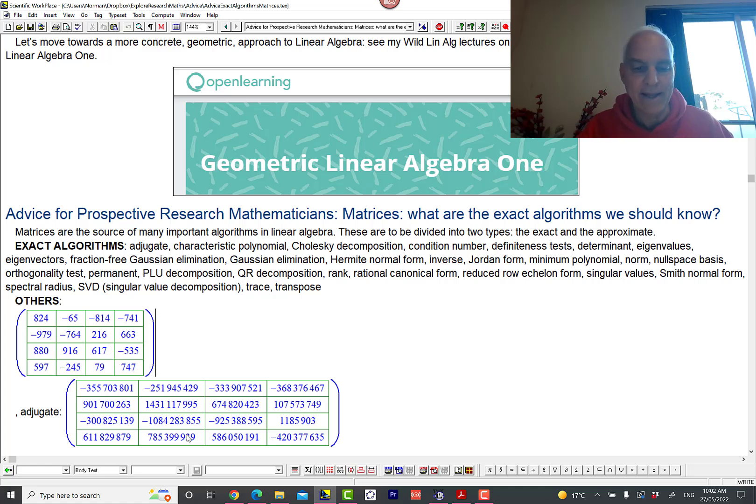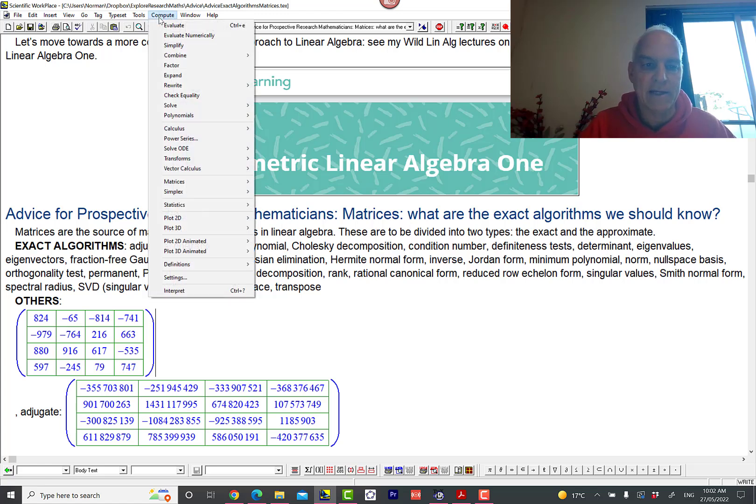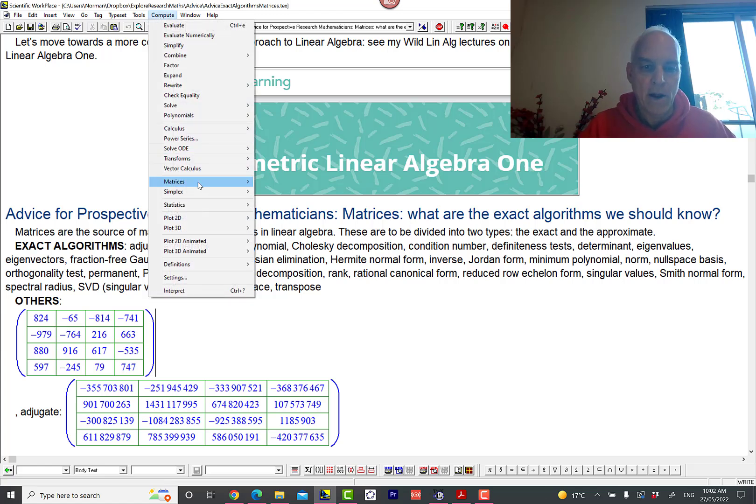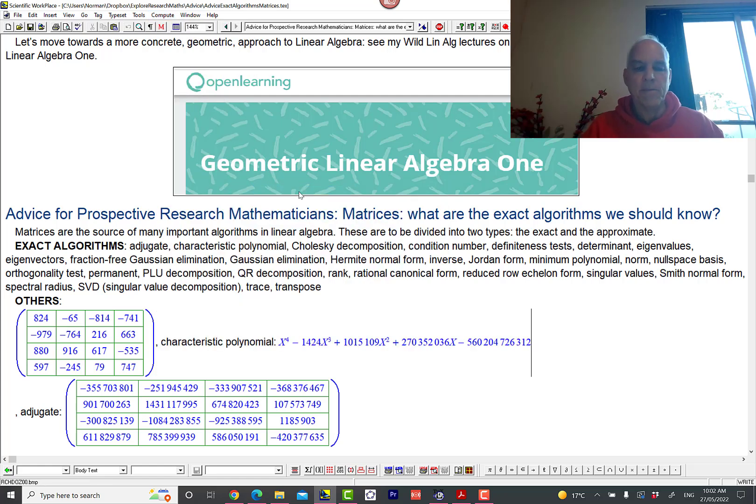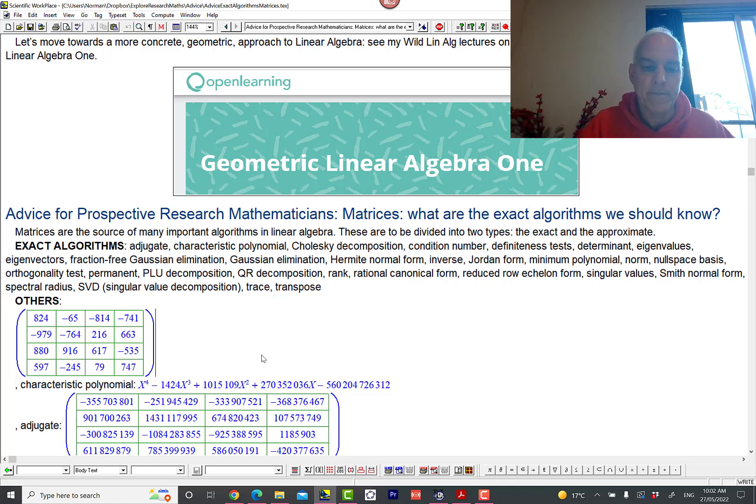We can see that this is clearly an exact algorithm, so this definitely fits in the exact box. Our next algorithm is the characteristic polynomial—a very important polynomial, this degree 4 polynomial that's associated with this matrix. This is absolutely key and it's clear that that's also an exact algorithm because we're getting exact integer values here.